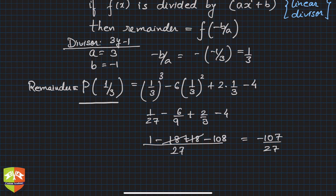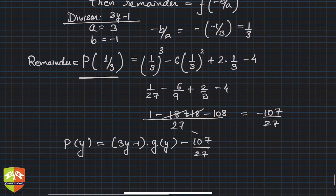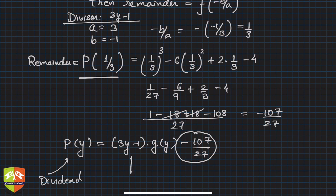So if you divide P(y) by 3y - 1, you get a quotient G(y). Thus, P(y) = (3y - 1) × G(y) + (-107/27). This -107/27 is the remainder. P(y) was the dividend, and 3y - 1 was the divisor.